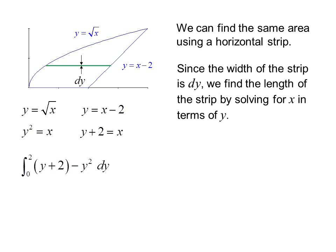Our integral becomes the integral from 0 to 2 of y plus 2 minus y squared dy. y plus 2 minus y squared is the length of the strip, so we took the longest distance minus the shorter distance.